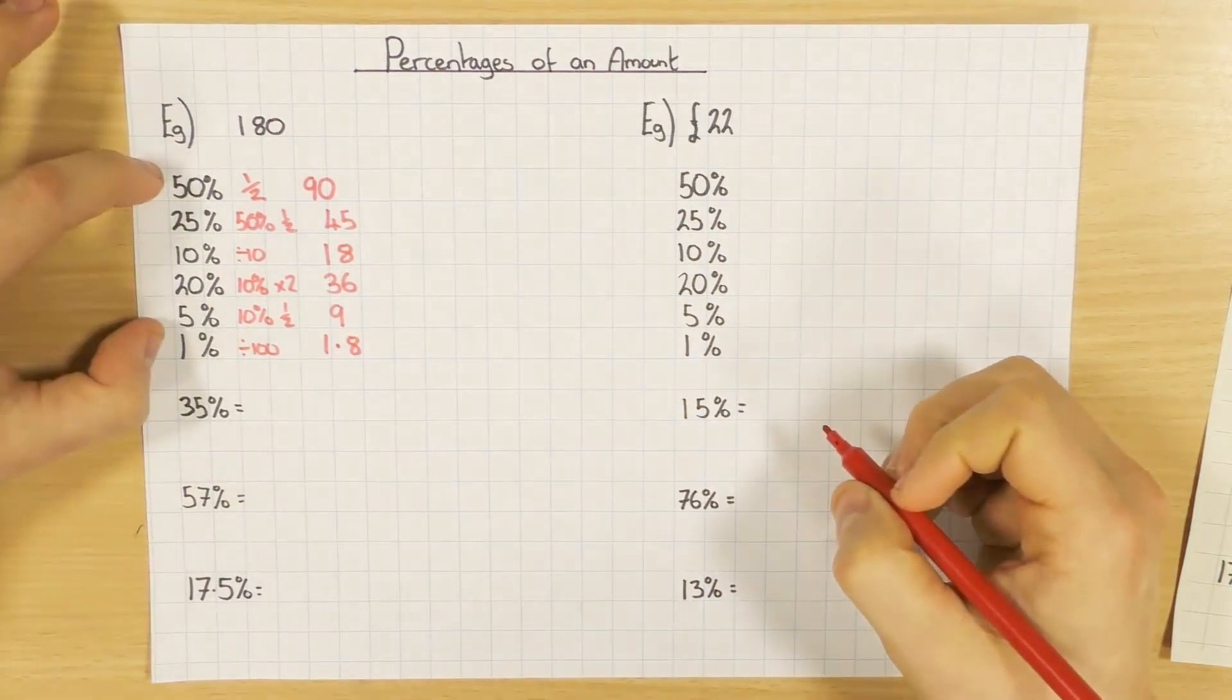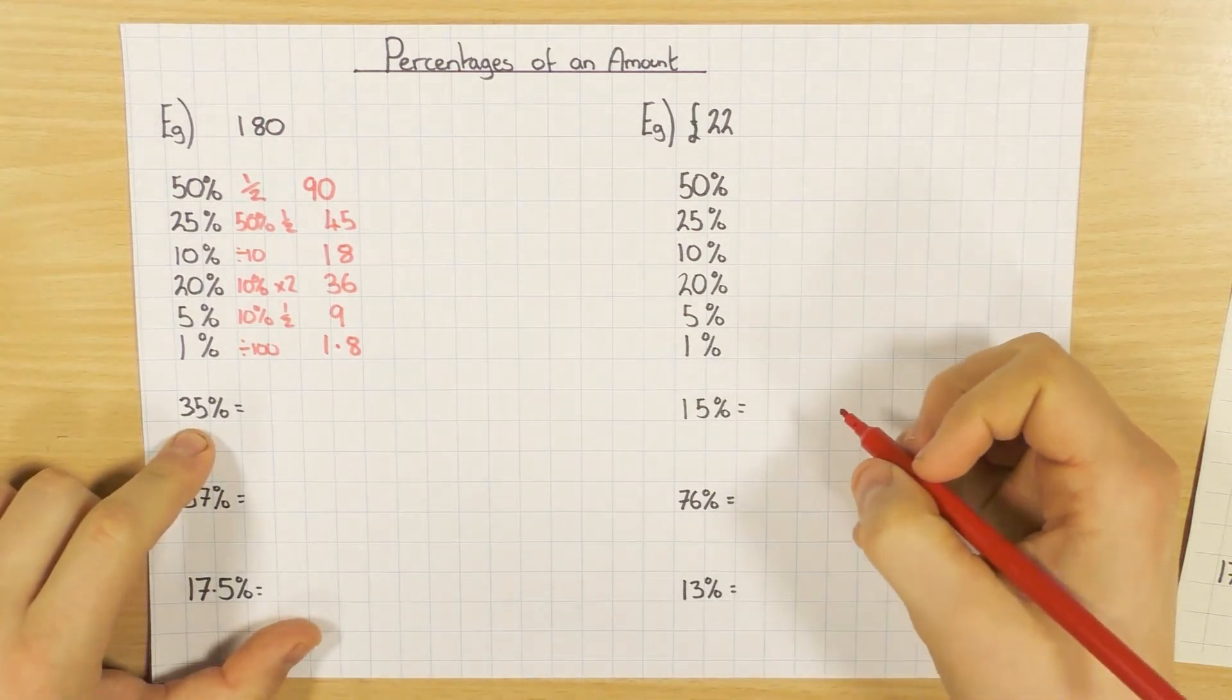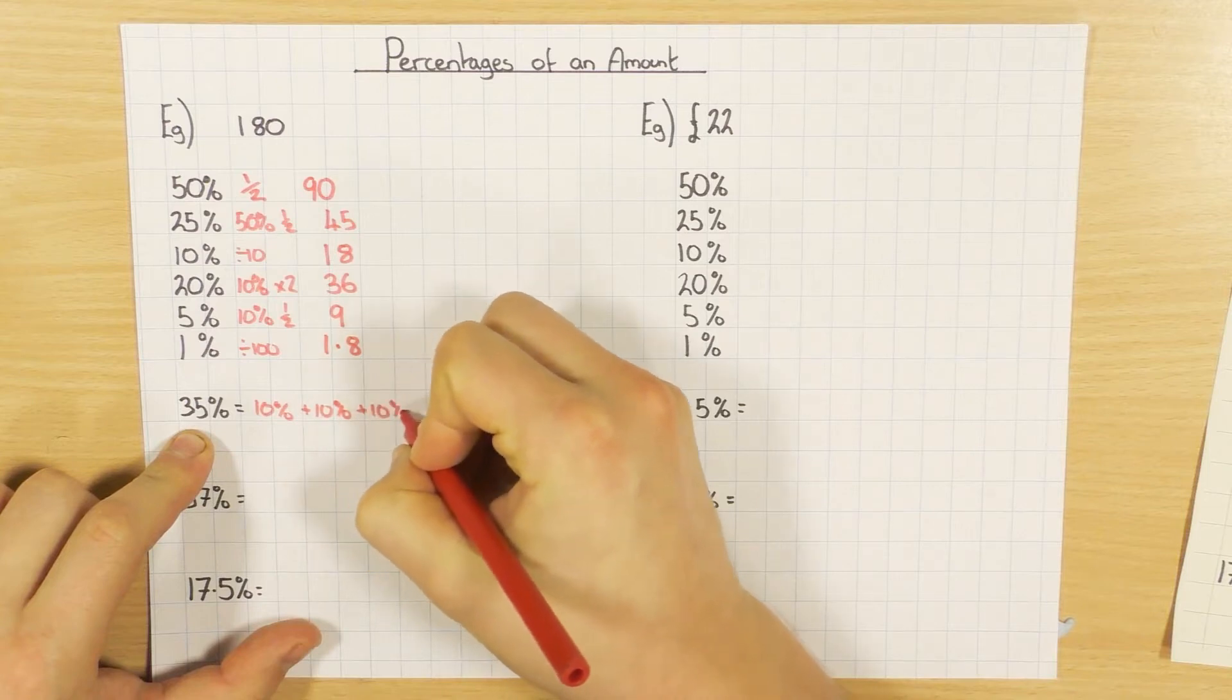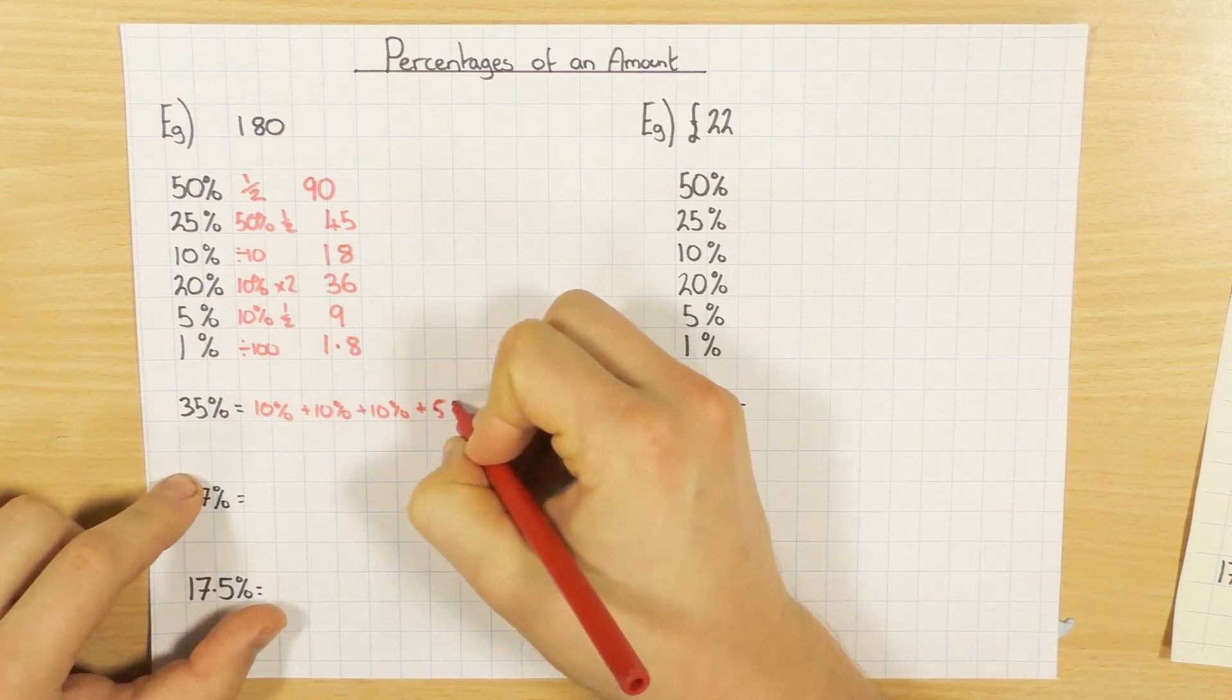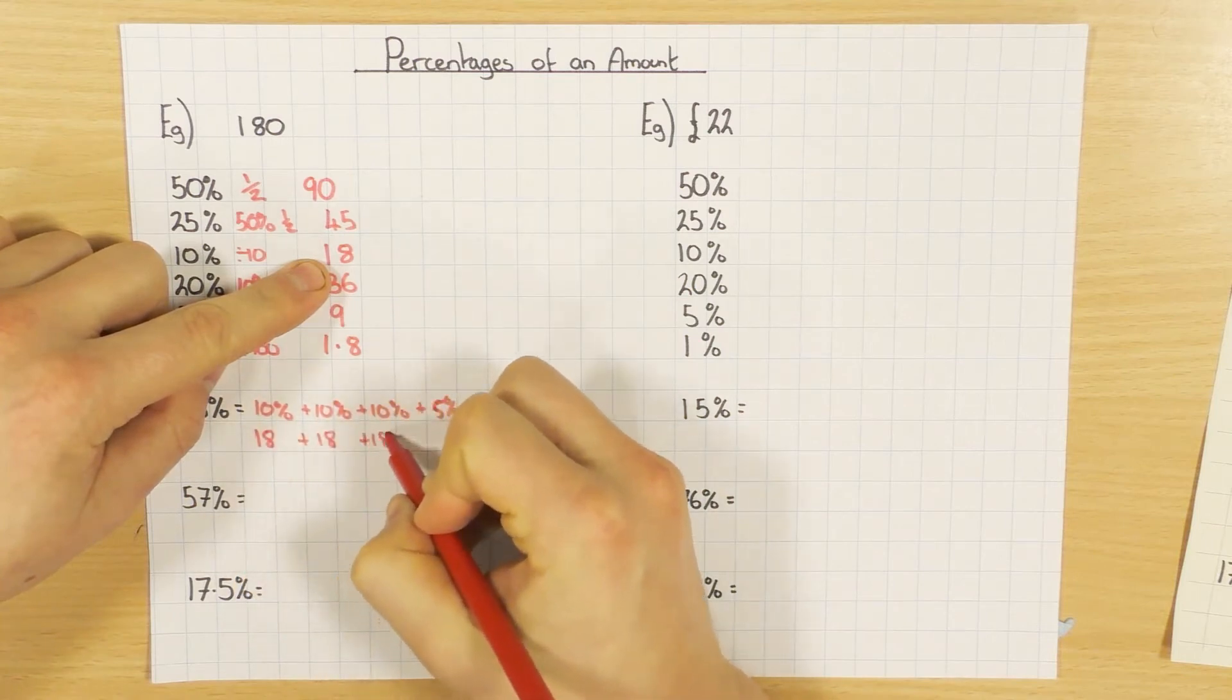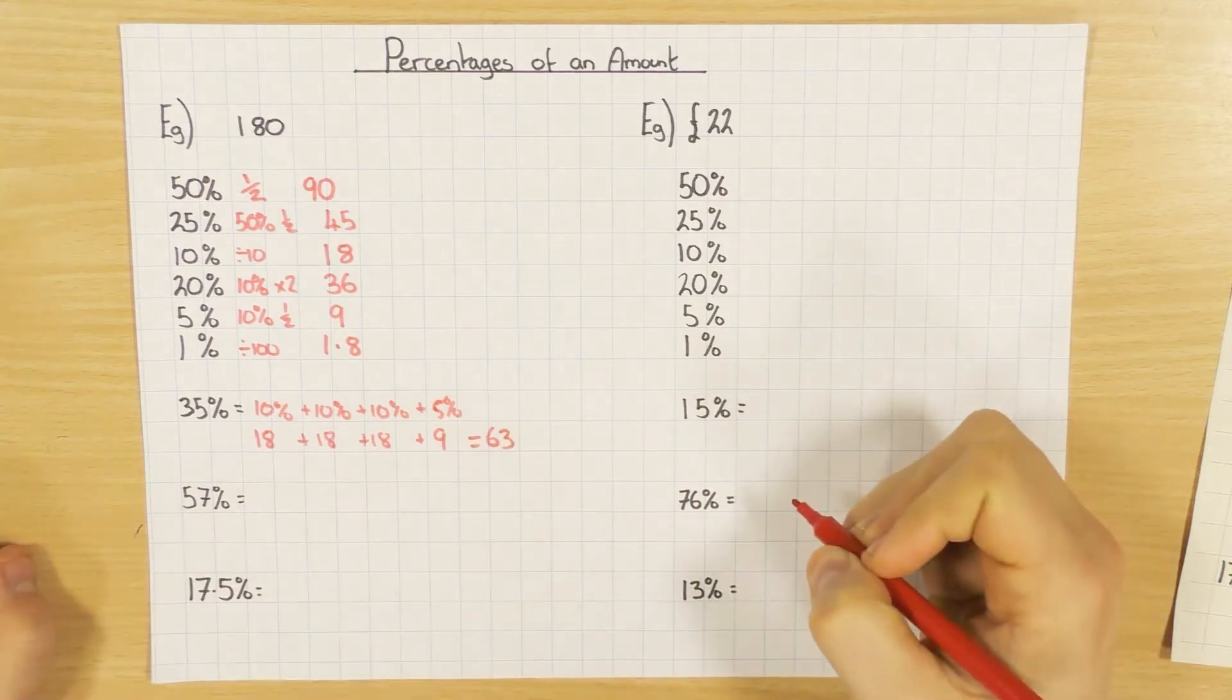If you find these, you can use a mixture of these to help you find out these percentages here. For 35%, you could do 10% plus 10% plus 10% plus 5%. So what do they all equal? We worked out 10% was 18, plus 18, plus 18, and then we said 5% was 9. So add all those up, what do you get? You should have 63.